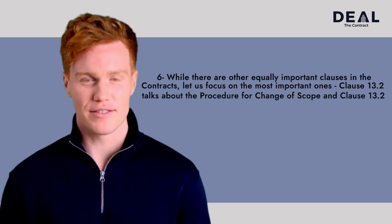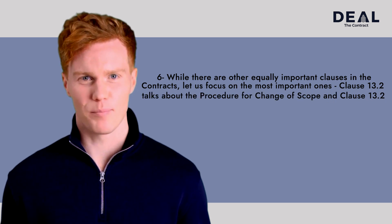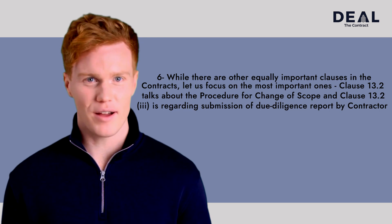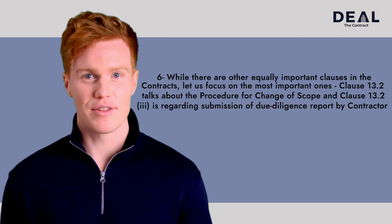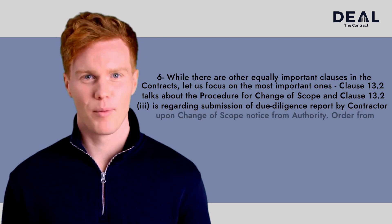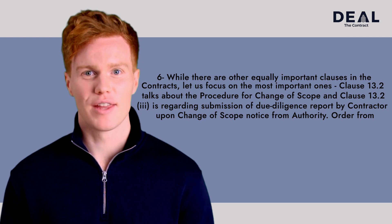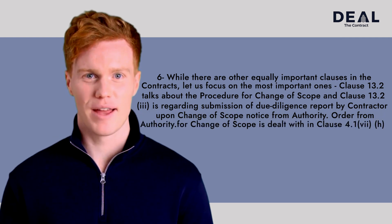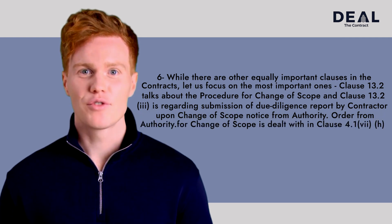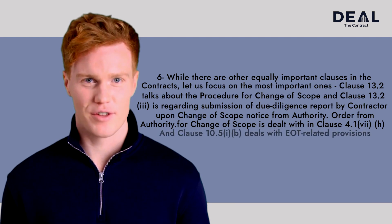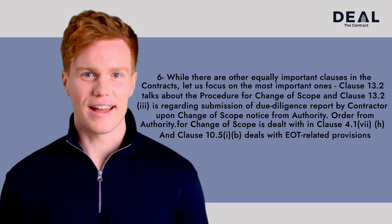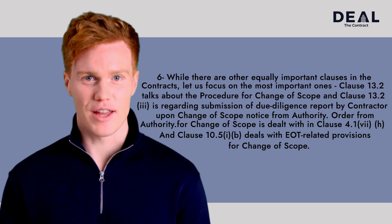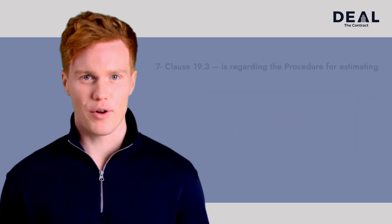While there are other equally important clauses, focusing on the most important ones: Clause 13.2 talks about the procedure for change of scope; Clause 13.2.3 is regarding submission of a due diligence report by the contractor upon a change of scope notice from the authority. Order from the authority for change of scope is dealt with in Clause 4.1.7(h), and Clause 10.5.1(b) deals with the OT-related provisions for change of scope.